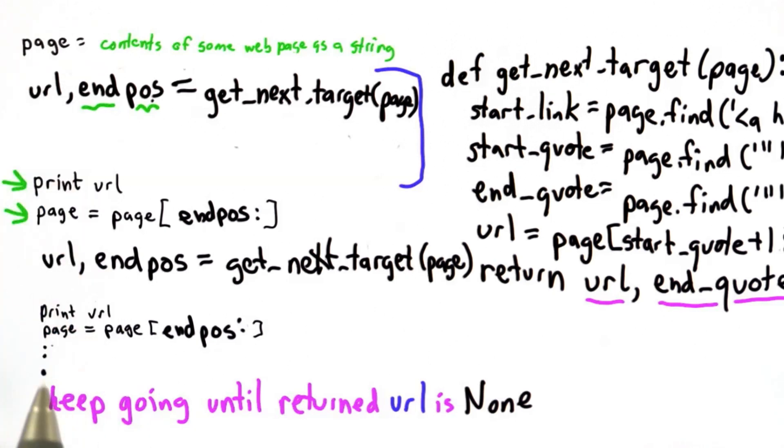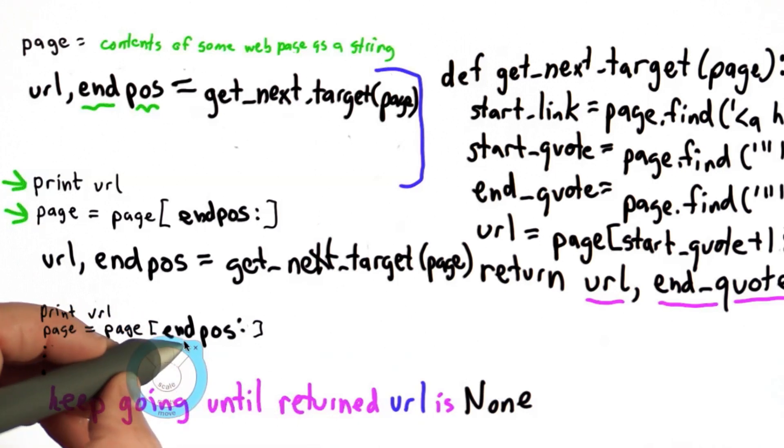So we've seen a way to keep going. That's a while loop. We've seen a way to do a test. We want to test the URL. And we have everything we need now to print all the links on the page. So I'm going to give you a start for how to write this procedure, and then you're going to finish it.